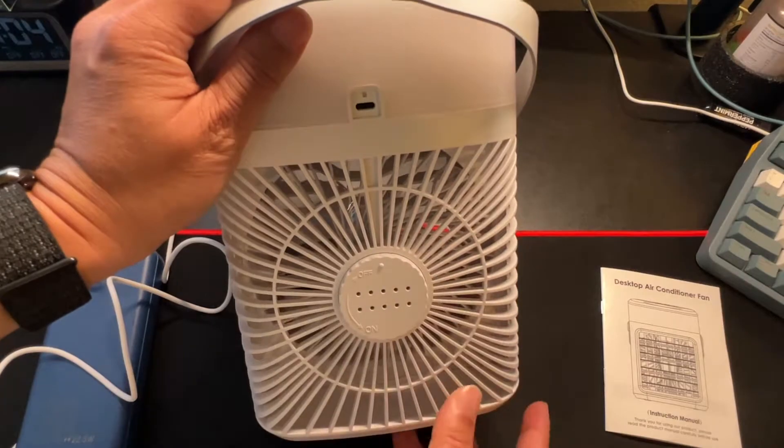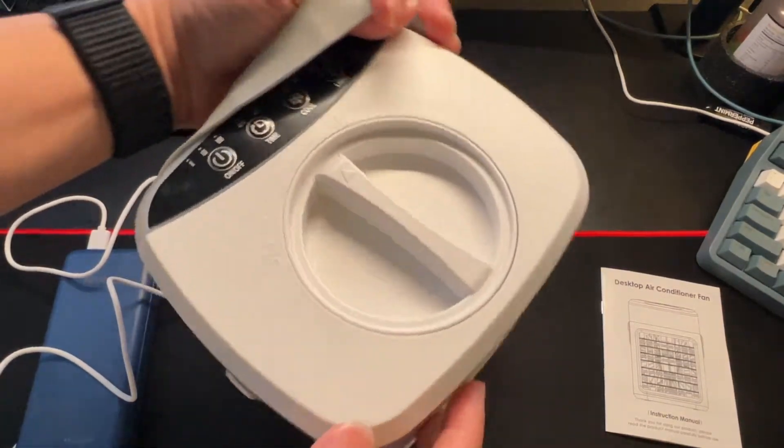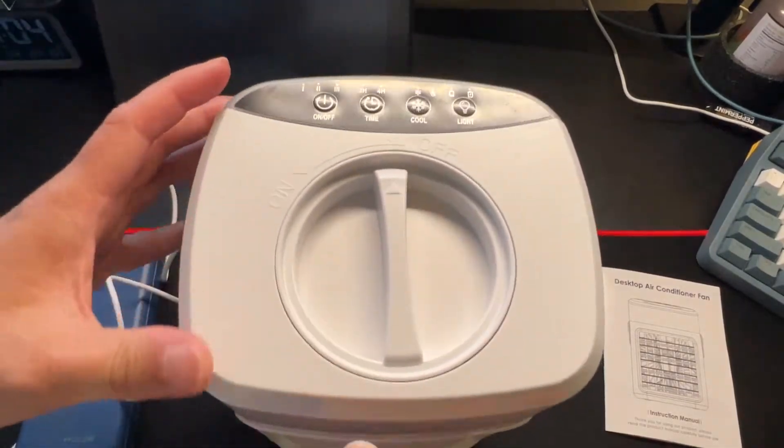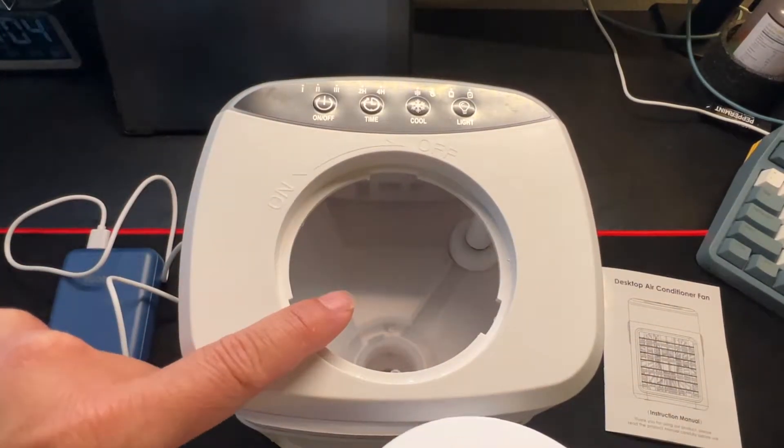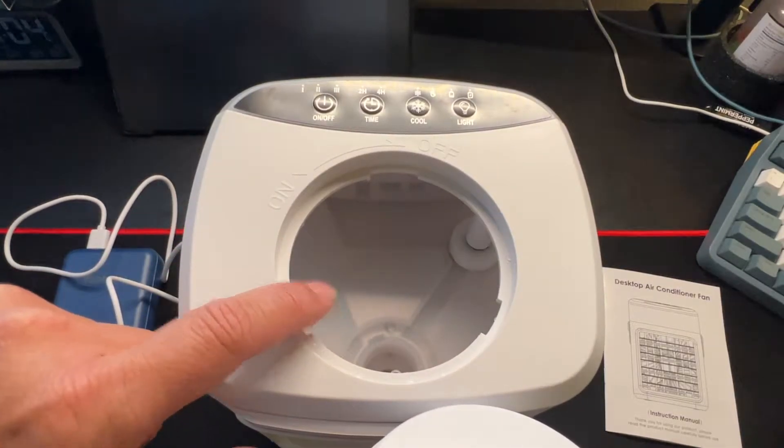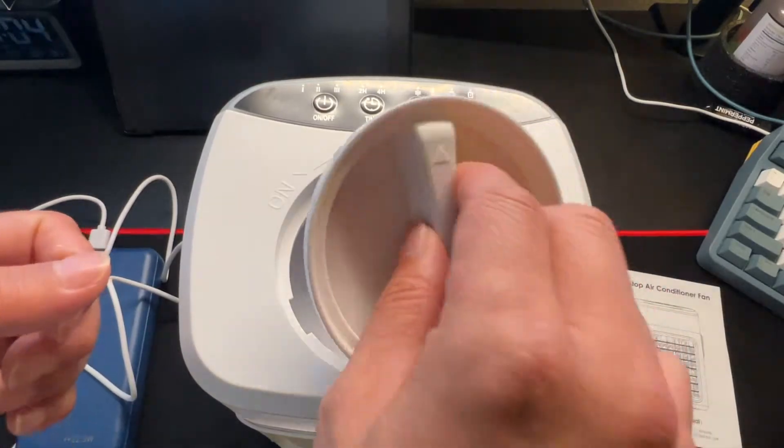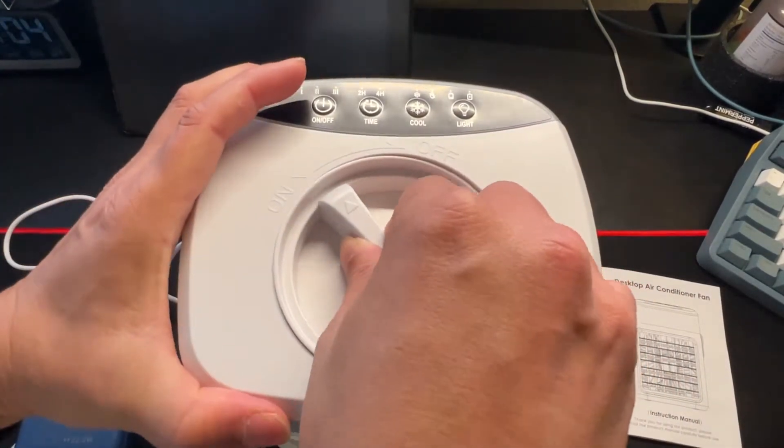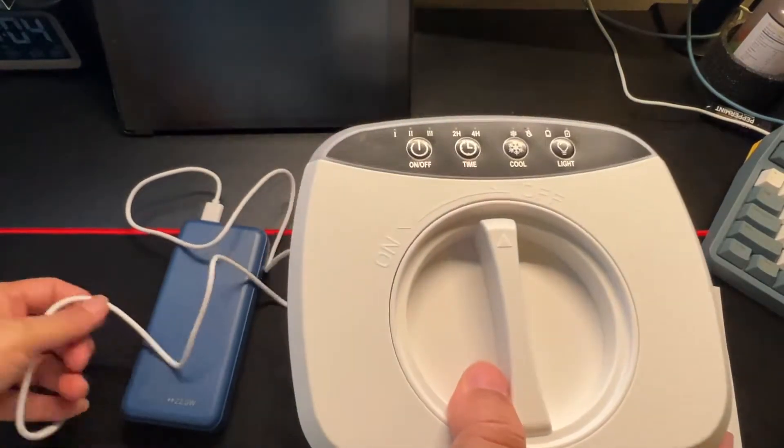There we go, lock that in place. On top you'll have your filling port. Just twist open and add a little bit of water. You could add cold water with an ice cube or two to get the water even colder. From there, you could even use a power bank to power this unit.